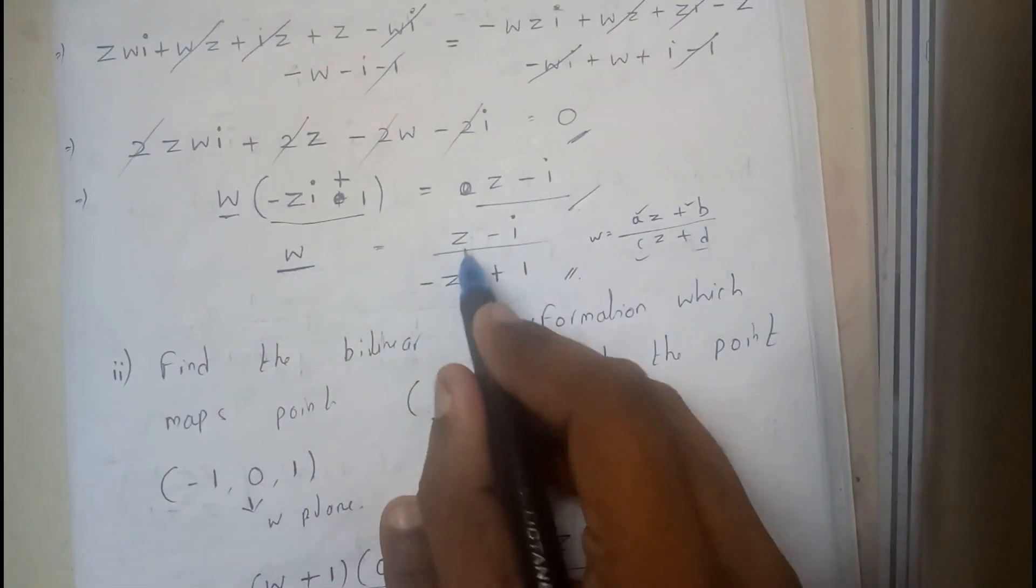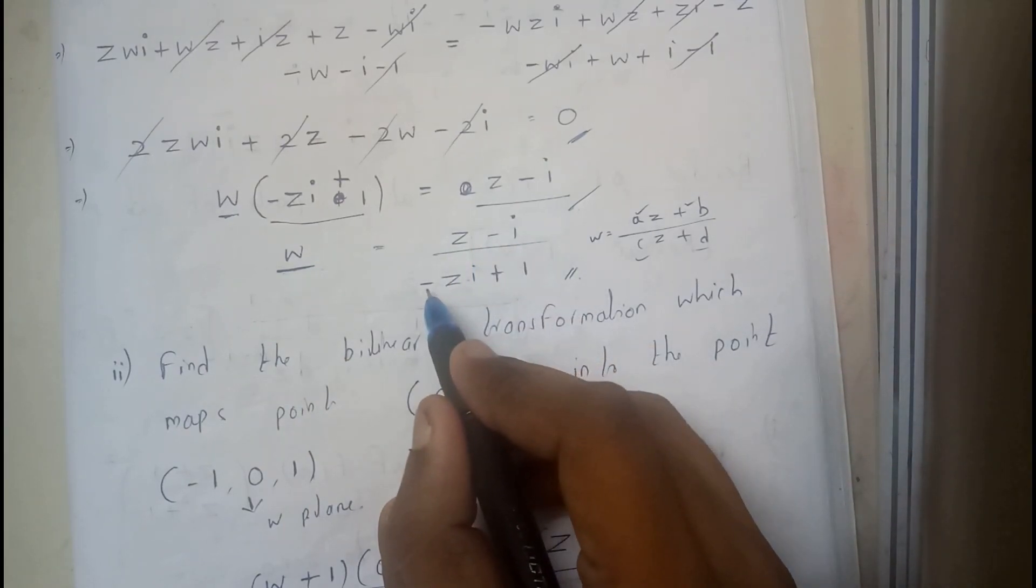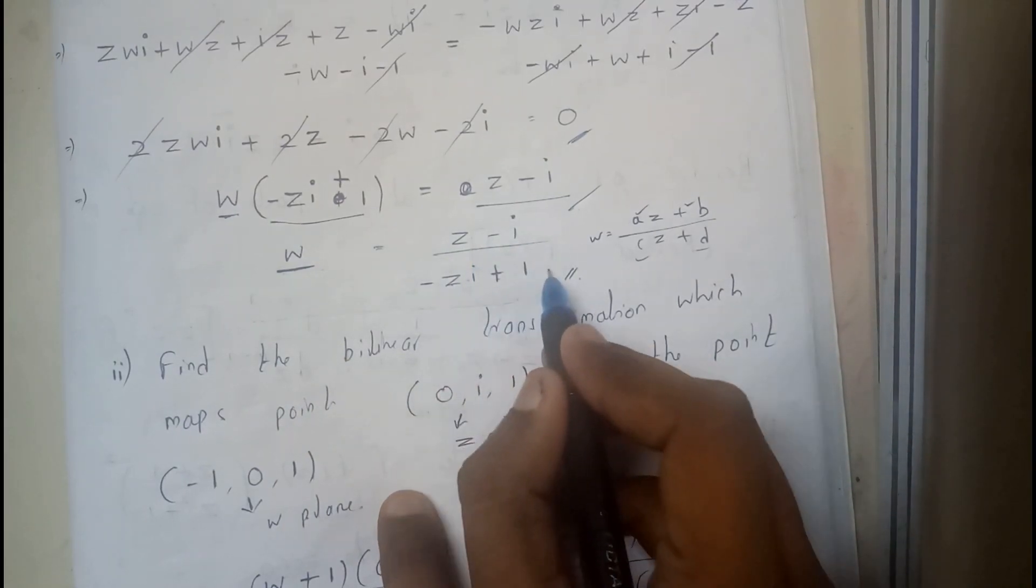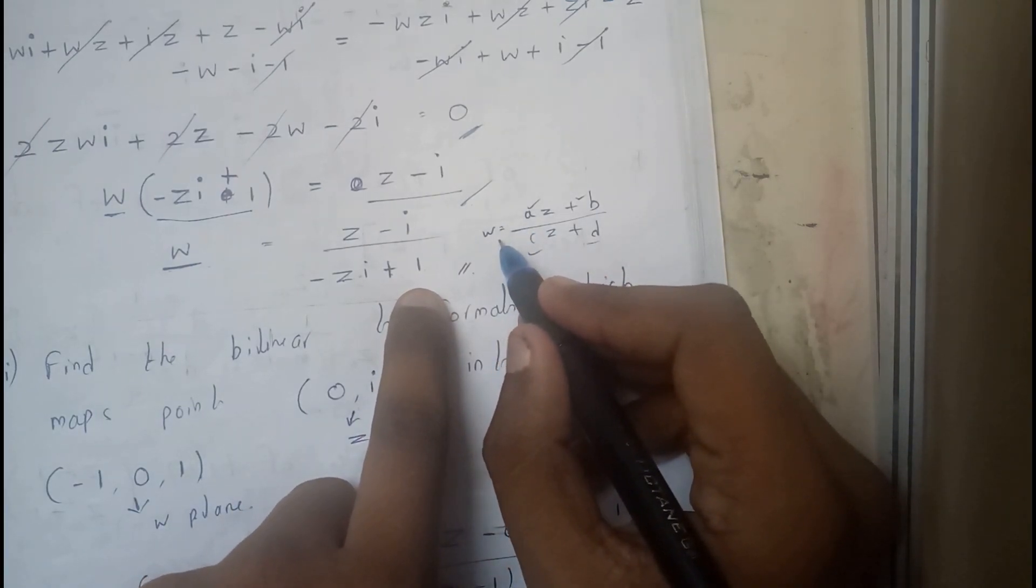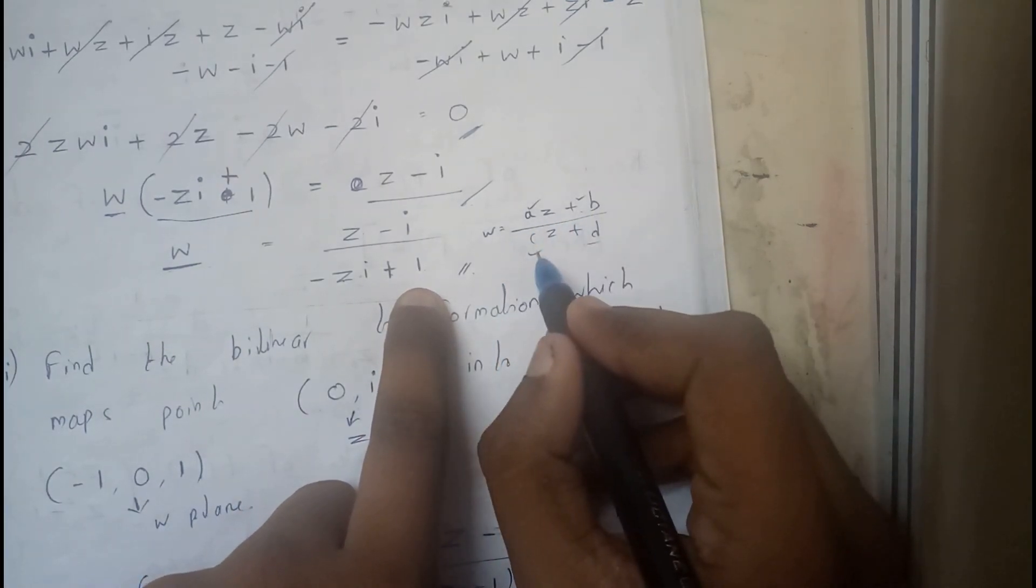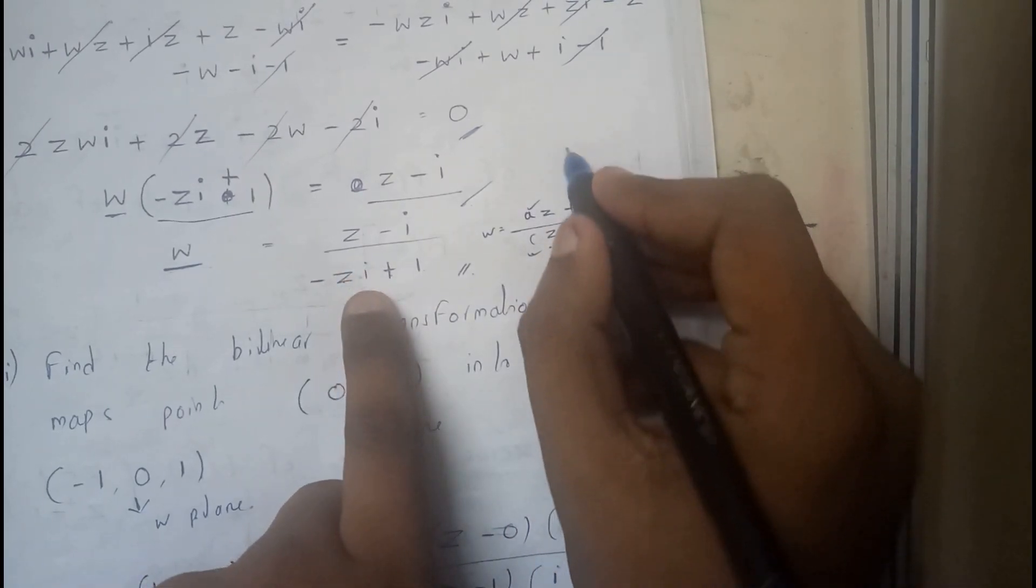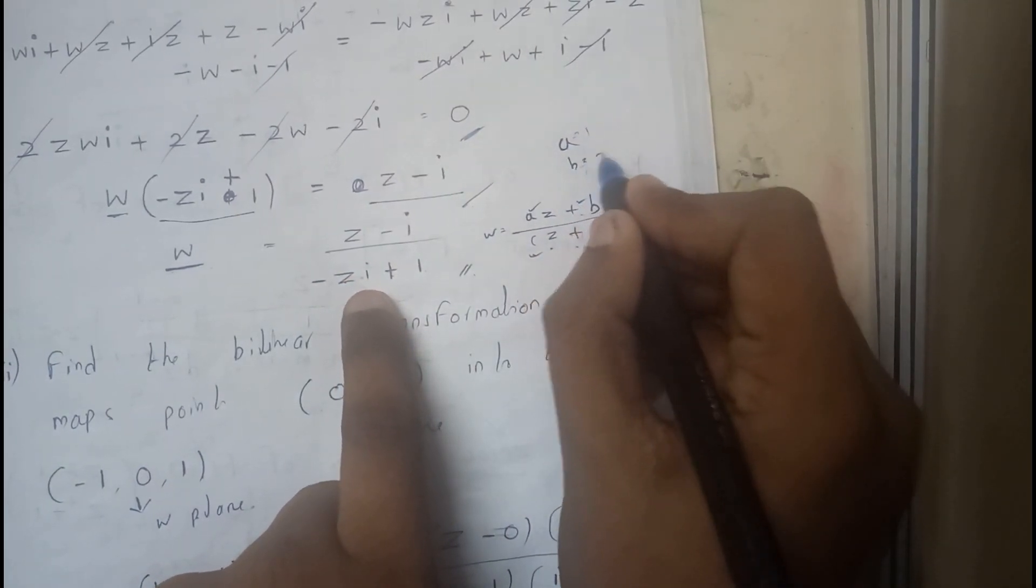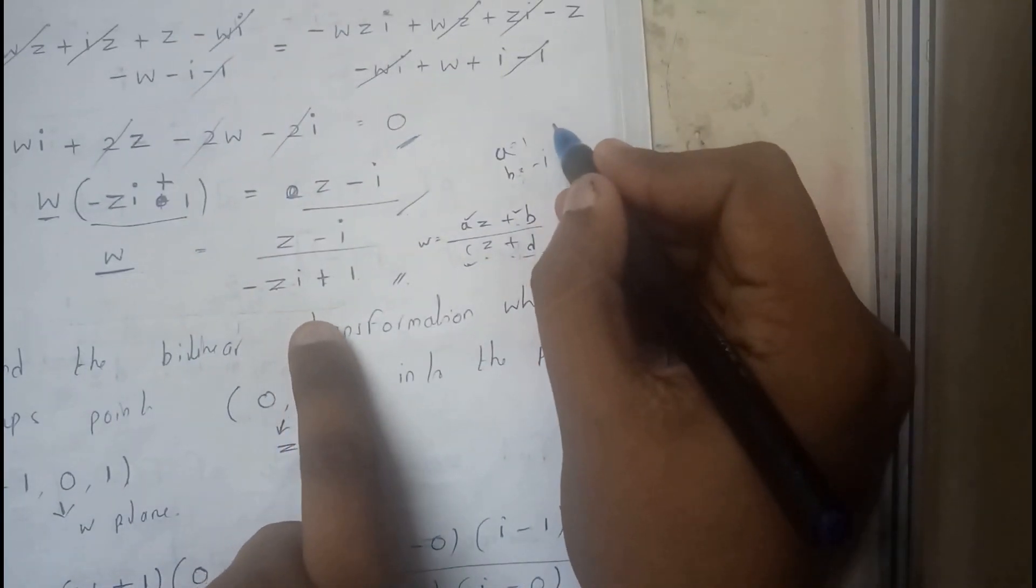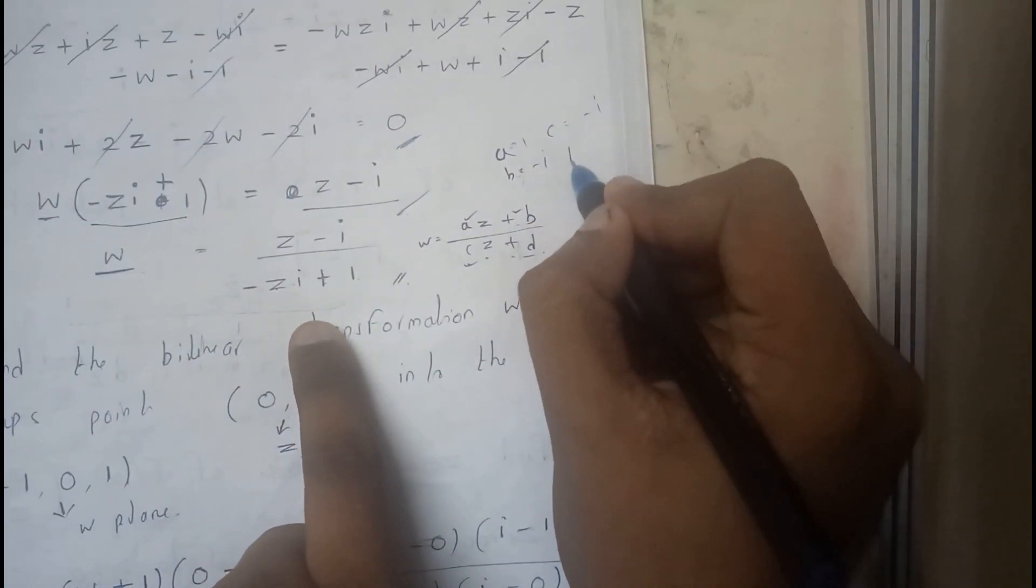So at the end you will be getting something like this. So I got here w equals (z - i) / (-z + i + 1). We have told you that w equals (az + b)/(cz + d). So you can directly write a equals 1, b equals -i, c equals -i, and d equals 1. This will be the conclusion of the problem.